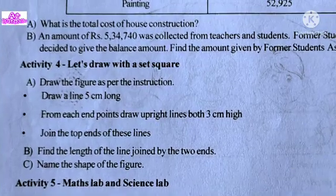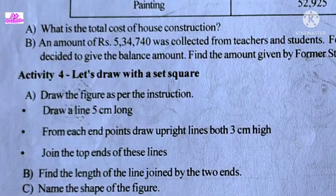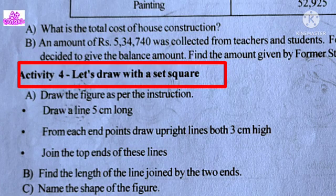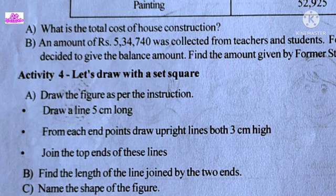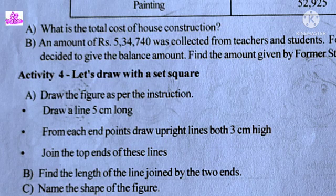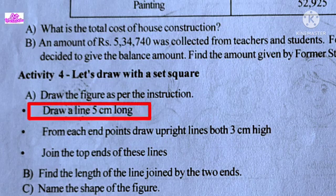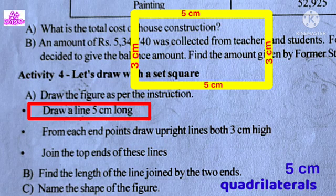Activity 4: Let's draw with a set square. We go through the instruction box shown as a target. Draw a line of 5cm.